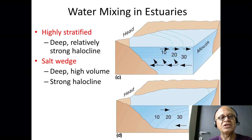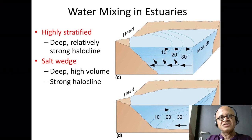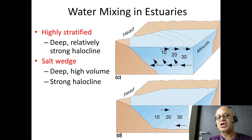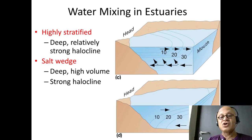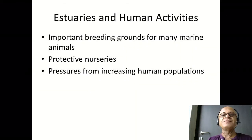You get a salt wedge when a very deep, very high volume of fresh water comes in to the head of the estuary, basically pushing against the ocean water and creating a heavy salt wedge. The brackish water of around 10 parts per thousand extends all the way to the mouth of the estuary, and the ocean water is restricted close to the mouth, mixing with this high volume of fresh water.